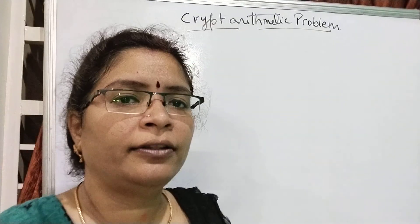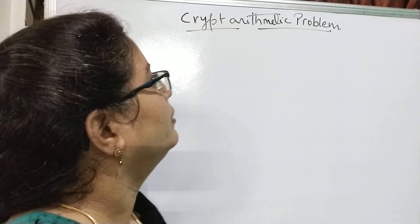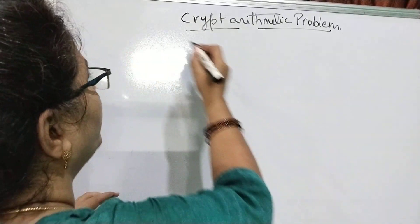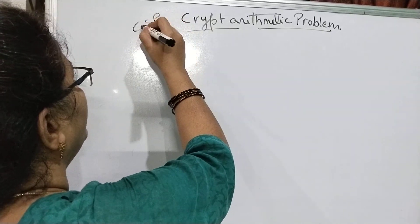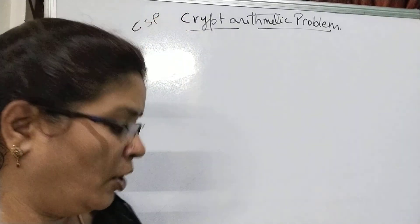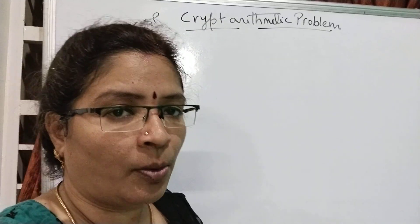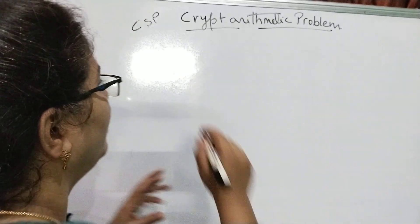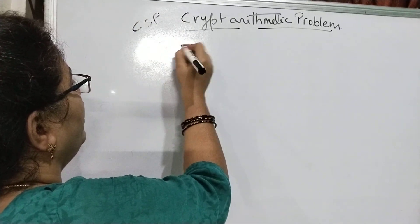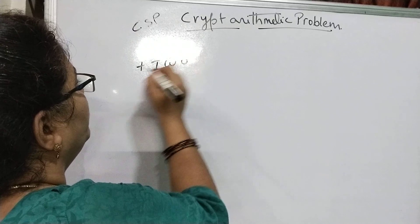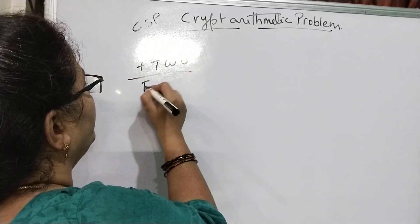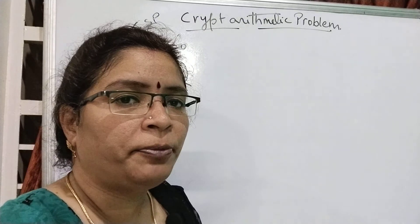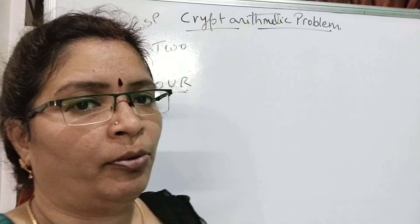Now we see the crypt arithmetic problem, which is another example of the CSP. Here we are calculating something like TWO plus TWO equals FOUR — this is the crypt arithmetic problem.